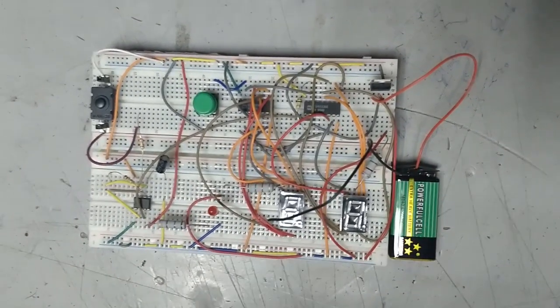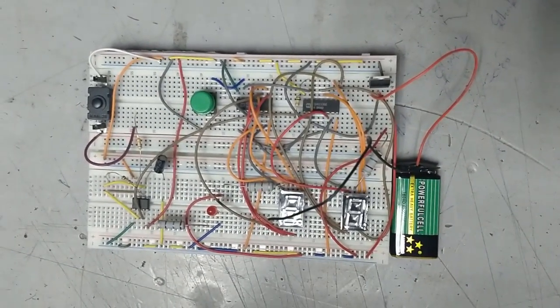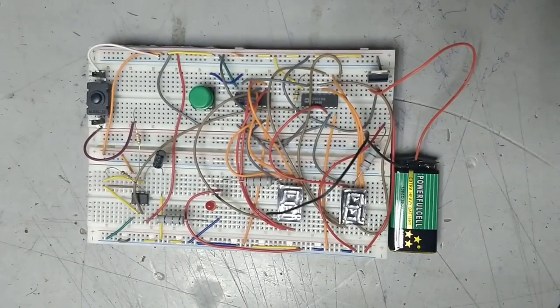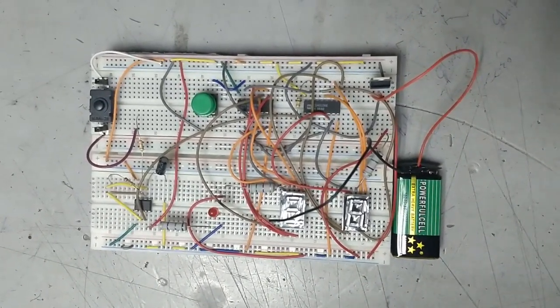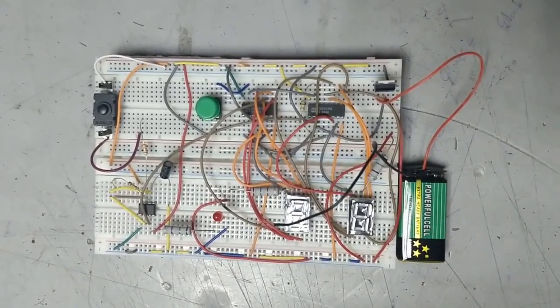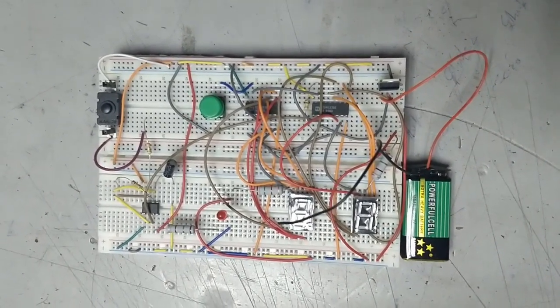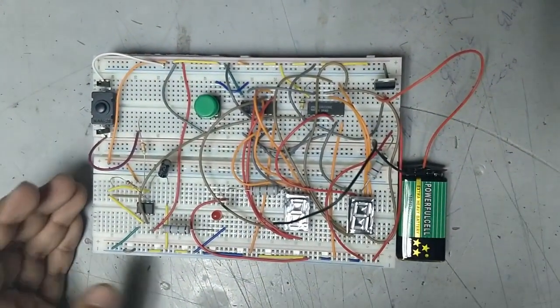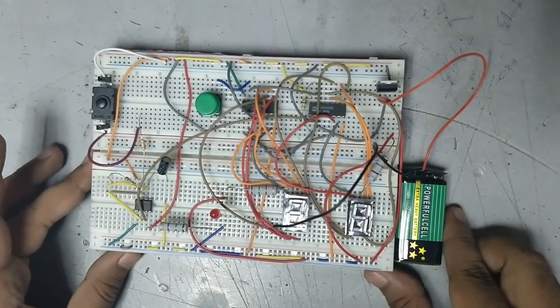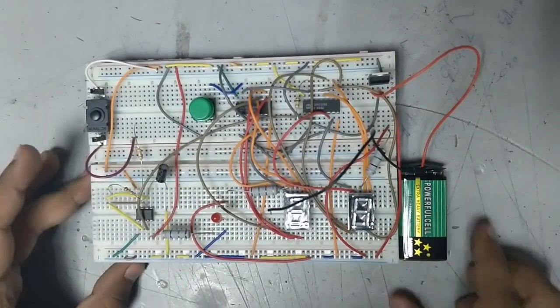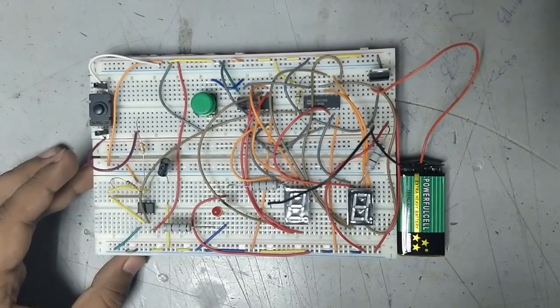Our project is a digital stopwatch. Often we need a stopwatch to differentiate the time of two events. Here we designed a simple digital stopwatch circuit without using any microcontroller. In our project we have used two IC4033, one 555 timer,